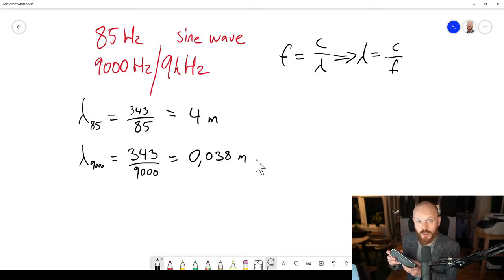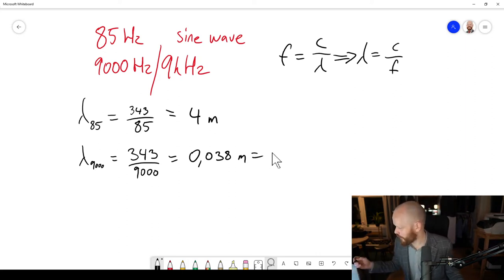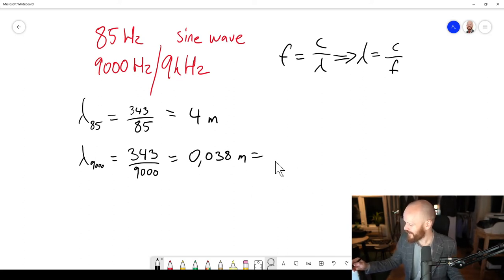And in the second case, 9,000 hertz high frequency, short wavelength. Now 0.038 meters, which is 3.8 centimeters.